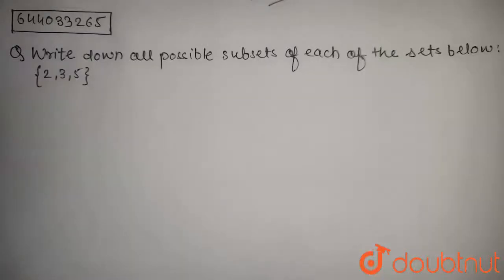The question is: write down all possible subsets of each of the sets below. Now the set we have is 2, 3, 5.